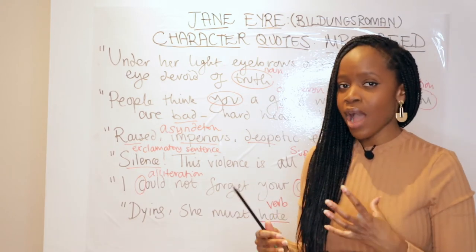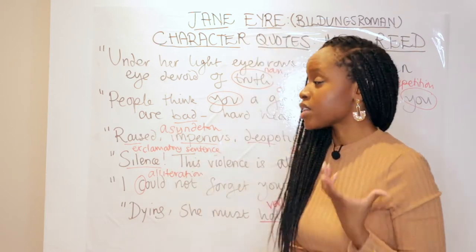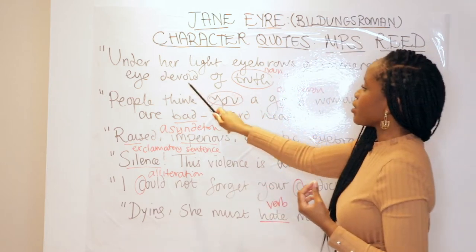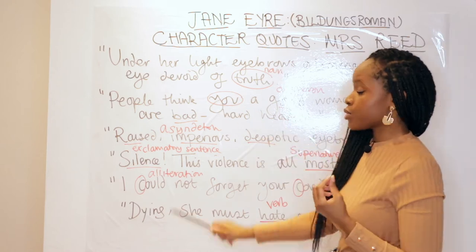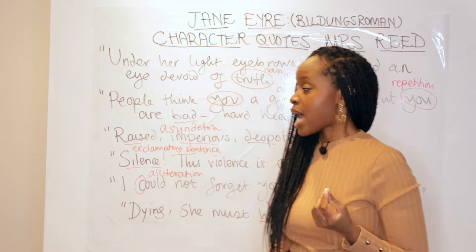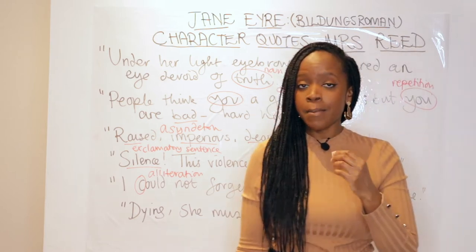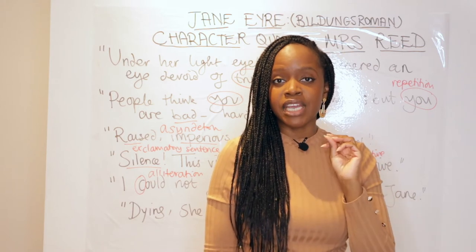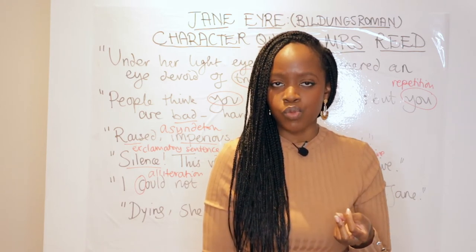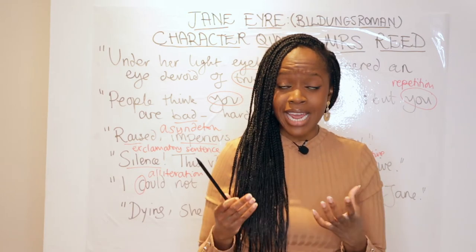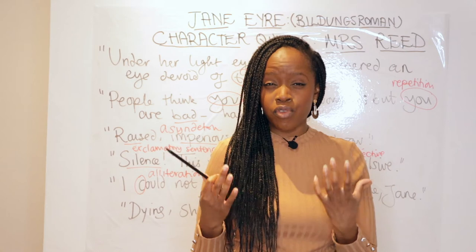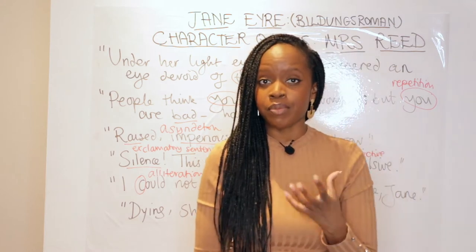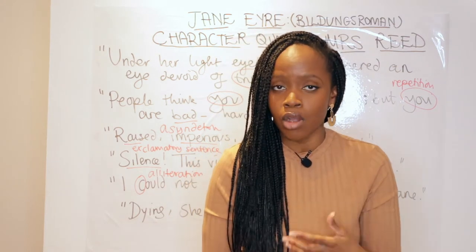Mrs. Reed's hateful, angry nature is emphasised through this first quotation: 'Under her light eyebrows glimmered an eye devoid of truth.' The word level analysis to focus on here is the abstract noun 'truth' — remember, an abstract noun is a noun you can't touch, taste, feel or see. Mrs. Reed was supposedly a very devout, good Christian woman, but the way she treated Jane Eyre illustrates that she was hypocritical — she was devoid of truth, did not follow the gospel, and mistreated a helpless young orphan.